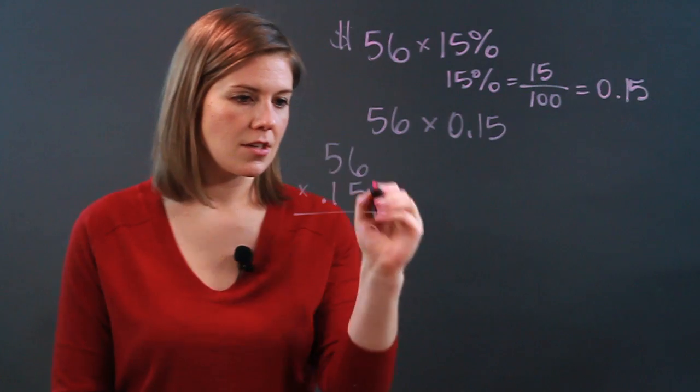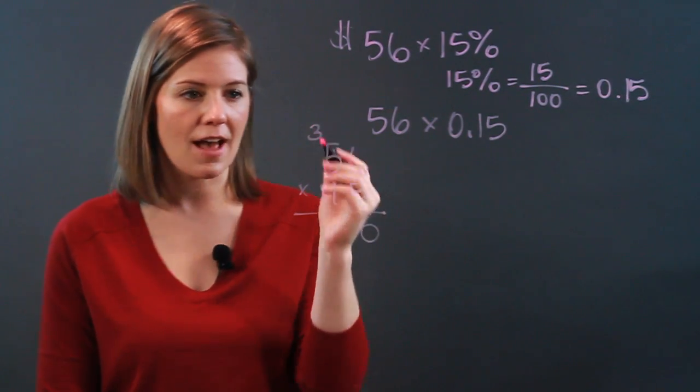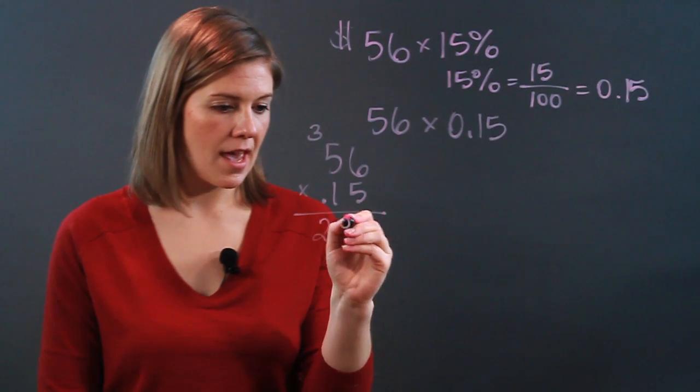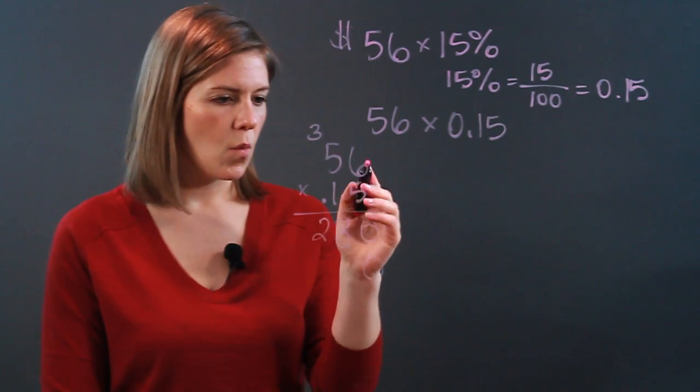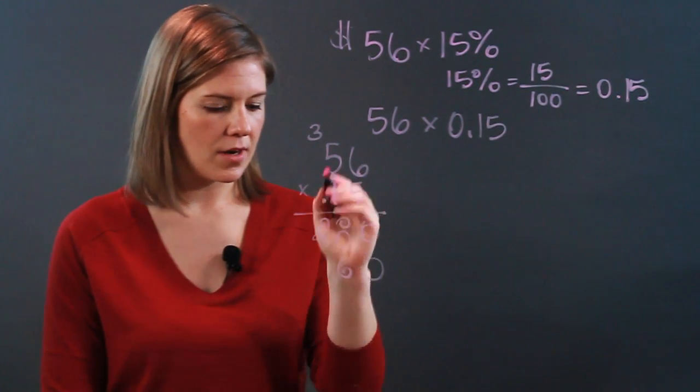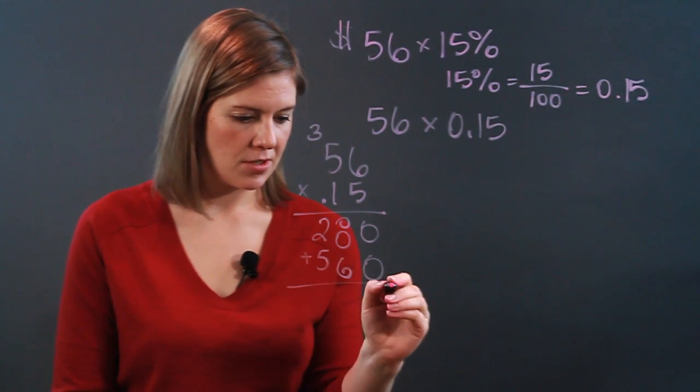So 5 times 6 is 30. 5 and 5, 25. 3 more is 28. I dropped my zero since the 1 is in the tens place. 1 and 6, that's a 6. 1 and 5, that's a 5. It is time to add.